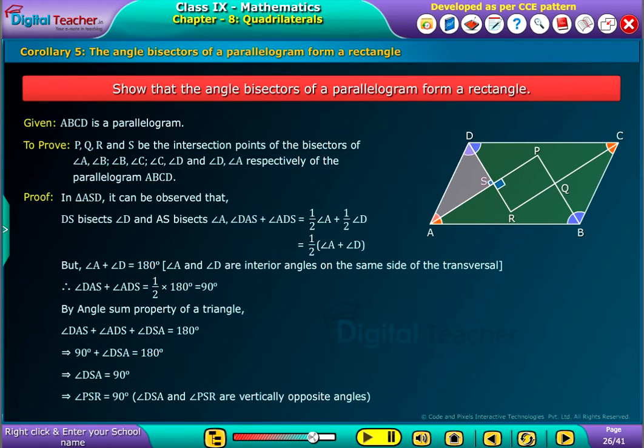That implies angle PSR equal to 90 degrees, as angle DSA and angle PSR are vertically opposite angles.